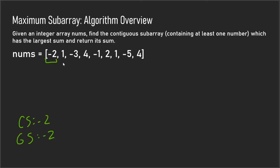Now we look to expand our subarray. We're going to take the greater of two numbers: either the current sum plus 1, or just 1 itself. The current sum plus 1 would be negative 1, or just 1. Since 1 is greater than negative 1, the subarray we're inspecting just becomes the 1, our current sum becomes 1, and the global sum also becomes 1 because 1 is greater than negative 2.